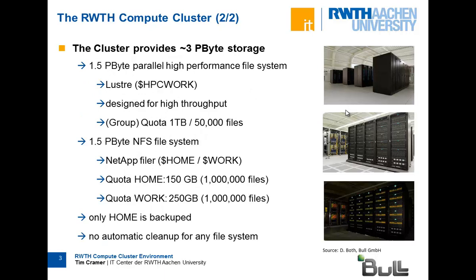A few words about the storage system, which is important for many applications, especially those using big data. We have three petabytes of storage divided into two partitions. The first is a 1.5 petabyte Lustre file system — a parallel high-performance system designed for high throughput. You access it via the $HPCWORK variable. You have a default quota of 1 terabyte but only 50,000 files, because the system is designed for large files — you should use big files but a small number of them.